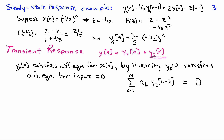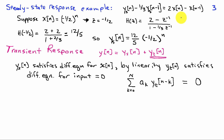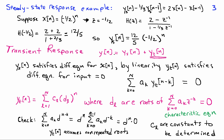Now let's look at the transient response. We said we were going to use linearity to write the total output as the sum of the steady-state response plus a transient term. Since the steady-state response satisfies the difference equation for a particular x of n, the transient response has to satisfy the difference equation with input equal to 0. We've already taken into account the right-hand side, so when we solve for the transient response we set the input term to 0. This gives us the sum from k equals 0 to n of a_k times y_t of n minus k equals 0.